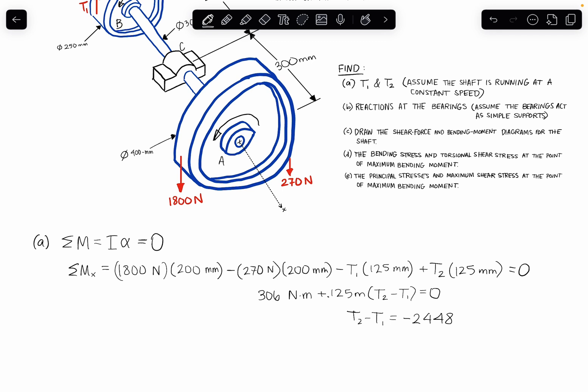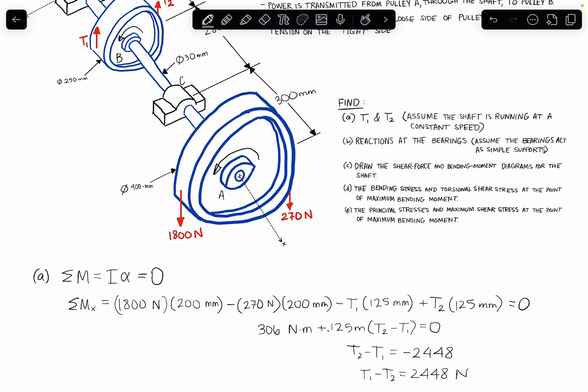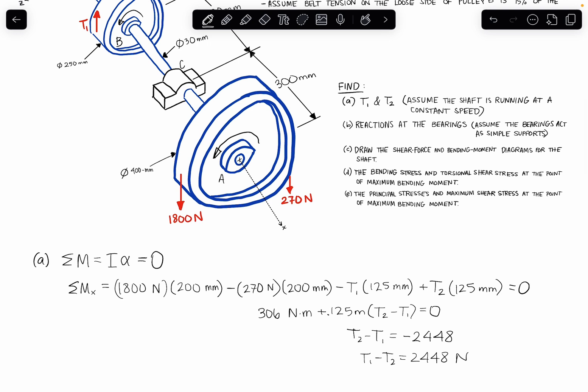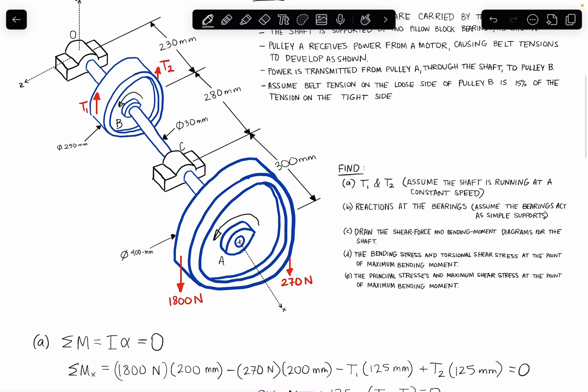Okay, so in another way we could write this is T1 minus T2 is 2,448, and that's newtons, right? So if we hadn't worked out already using kind of our common sense logic of which side of this belt is going to have higher tension, this equation would give it to us anyway, right? We can see that T1 is going to be greater than T2 because T1 minus T2 is a positive number. So again, going up to our drawing and looking at the direction of rotation, that makes sense, that T1 would be bigger than T2.